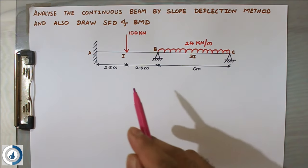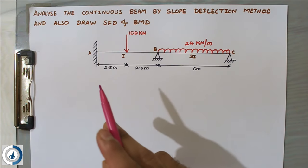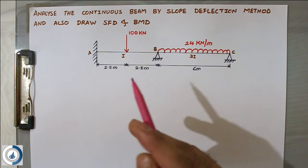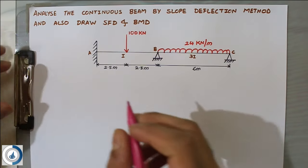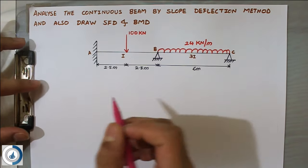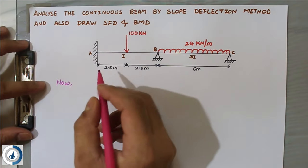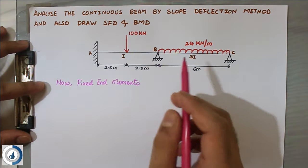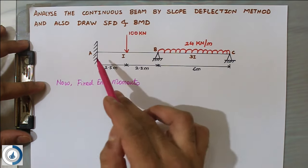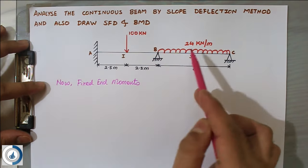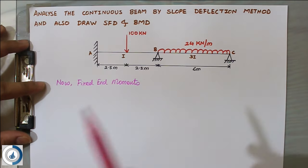As usual, we start by finding the fixed end moments, span by span. For this beam there will be four fixed end moments: MFAB, MFBA, MFBC, and MFCB.